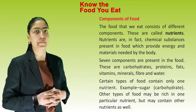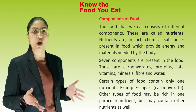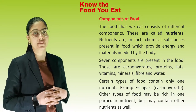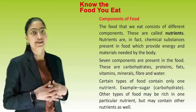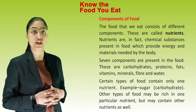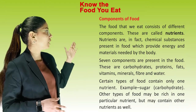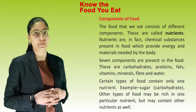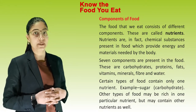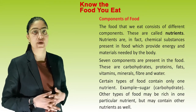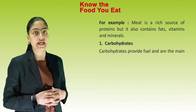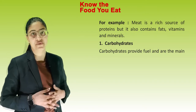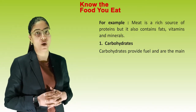Seven components are present in the food. These are carbohydrates, proteins, fats, vitamins, minerals, fibres and water. Certain types of food contain only one nutrient. Other types of food may be rich in one particular nutrient but may contain other nutrients as well. For example, meat is a rich source of protein but also contains fats, vitamins and minerals.